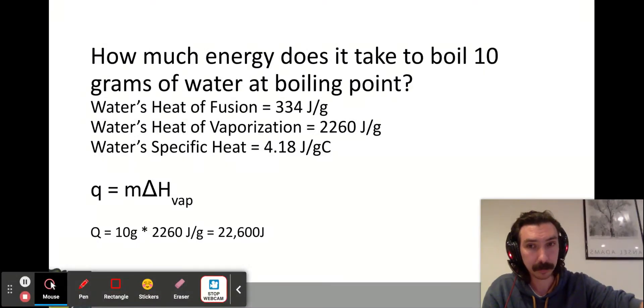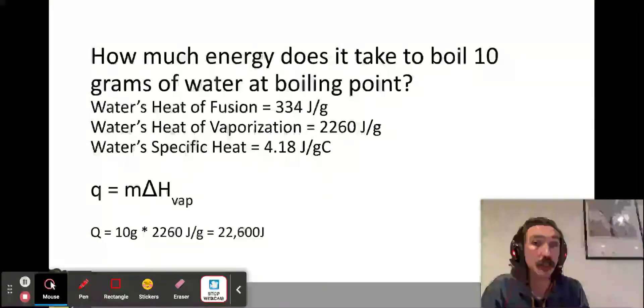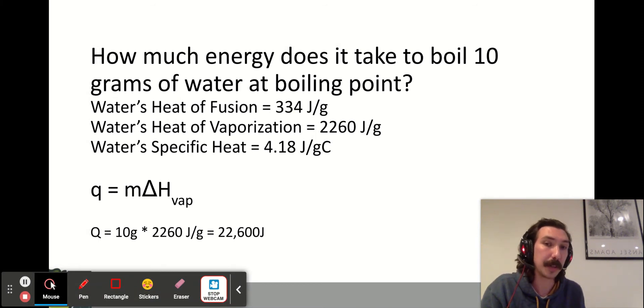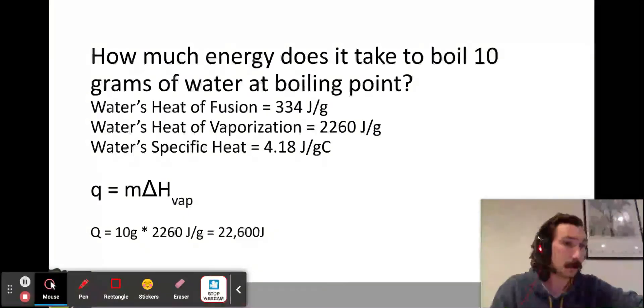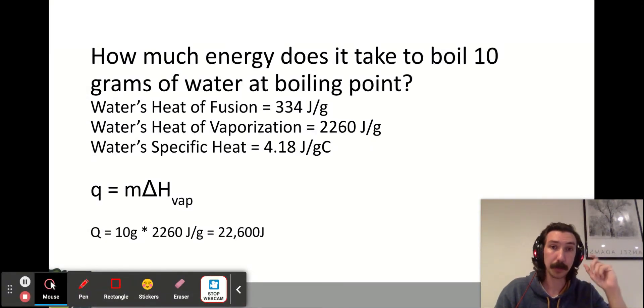We just again throw our mass in there—10 grams—multiply it by our enthalpy of vaporization, 2260 joules per gram, and we get our answer: 22,600 joules to boil 10 grams of water.